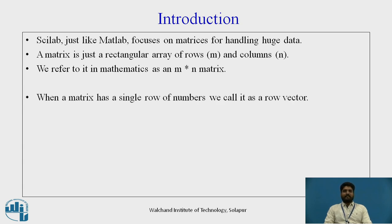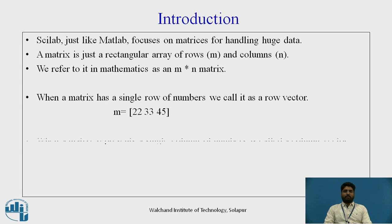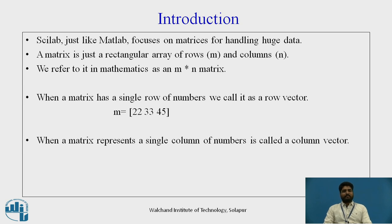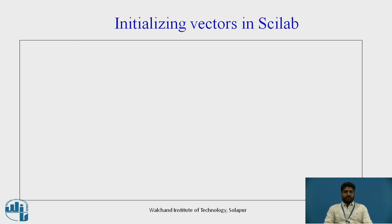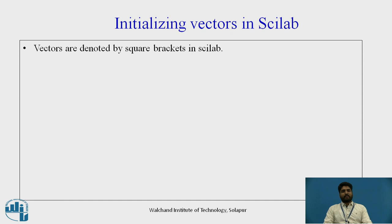When a matrix has a single row of numbers, we call it a row vector, where M shows a single row. Where a matrix represents a single column, it is called a column vector, where N shows a column vector. Let us see how to initialize vectors in Scilab — that is, row vector and column vector.